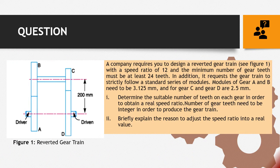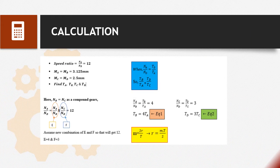Hi and Assalamualaikum. My name is Nazira Akilah and I will explain the question part. There are two questions given. First, to determine the suitable number of teeth on each gear to update a real speed ratio. Second, briefly explain the reason to adjust the speed ratio into a real value. The information given are speed ratio NA over ND equals 12, modulus of gear A to gear B is 3.125 mm, and modulus of gear C to gear D is 2.5 mm.